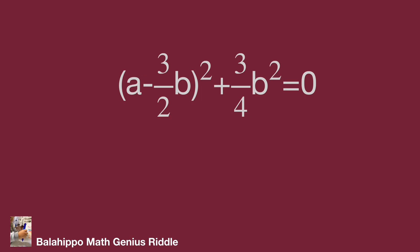To meet the criteria of this equation, then (a - 3/2b)² = 0 and 3/4b² = 0. So b = 0 and then a = 0. That's the answer.